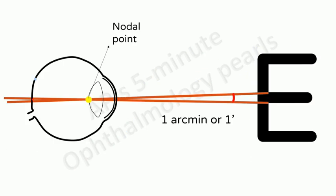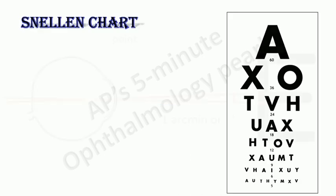So, an object to be distinguishable by the eye has to subtend a minimum of one arc minute at the nodal point of the eye. This is the principle on which the Snellen chart is based.